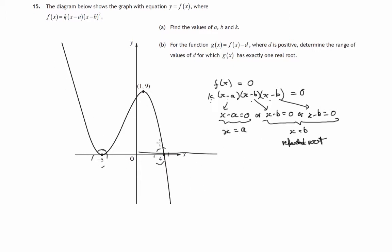It's a feature of these graphs that if the graph comes down and touches the x-axis, then that will give you a repeated root. So we know that x equals negative 5 is this case. Therefore, b is equal to negative 5. x equals 4 gives this. So a must be equal to 4.